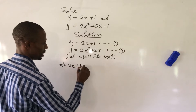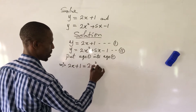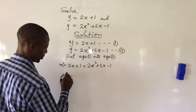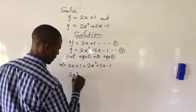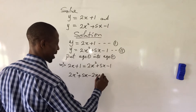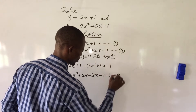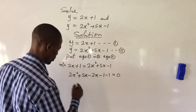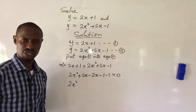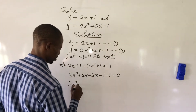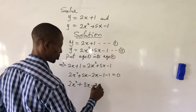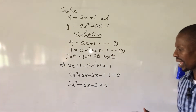This gives us 2x plus 1 equal to 2x squared plus 5x minus 1. When we rearrange, we get 2x squared plus 5x minus 2x minus 1 minus 1 equal to 0, which simplifies to 2x squared plus 3x minus 2 equal to 0. Now if you look at this carefully, this is a quadratic equation.